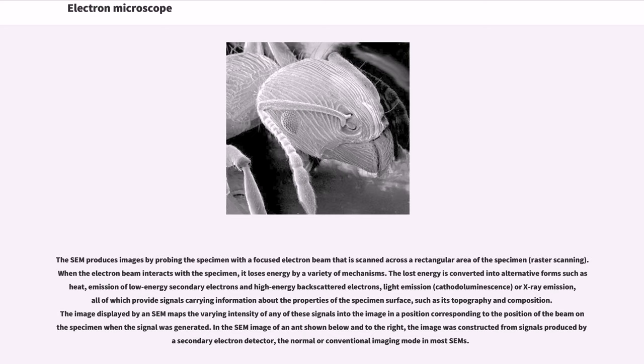such as its topography and composition. The image displayed by an SEM maps the varying intensity of any of these signals into the image in a position corresponding to the position of the beam on the specimen when the signal was generated. In the SEM image of an ant shown below and to the right, the image was constructed from signals produced by a secondary electron detector,